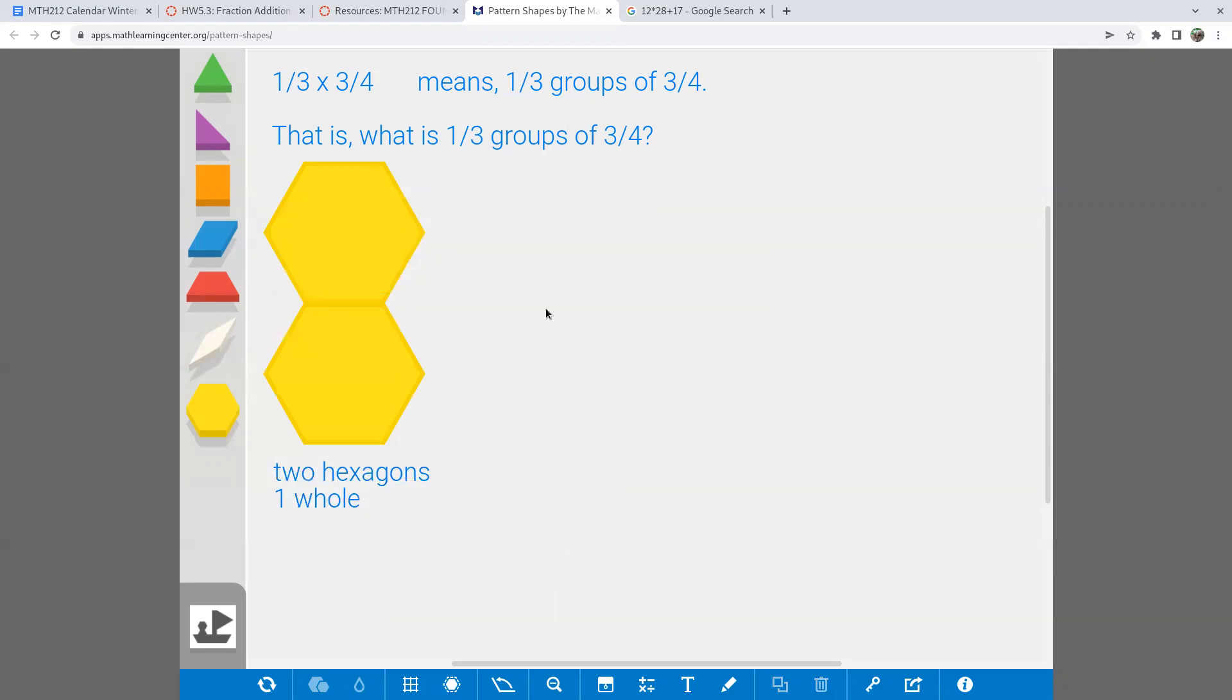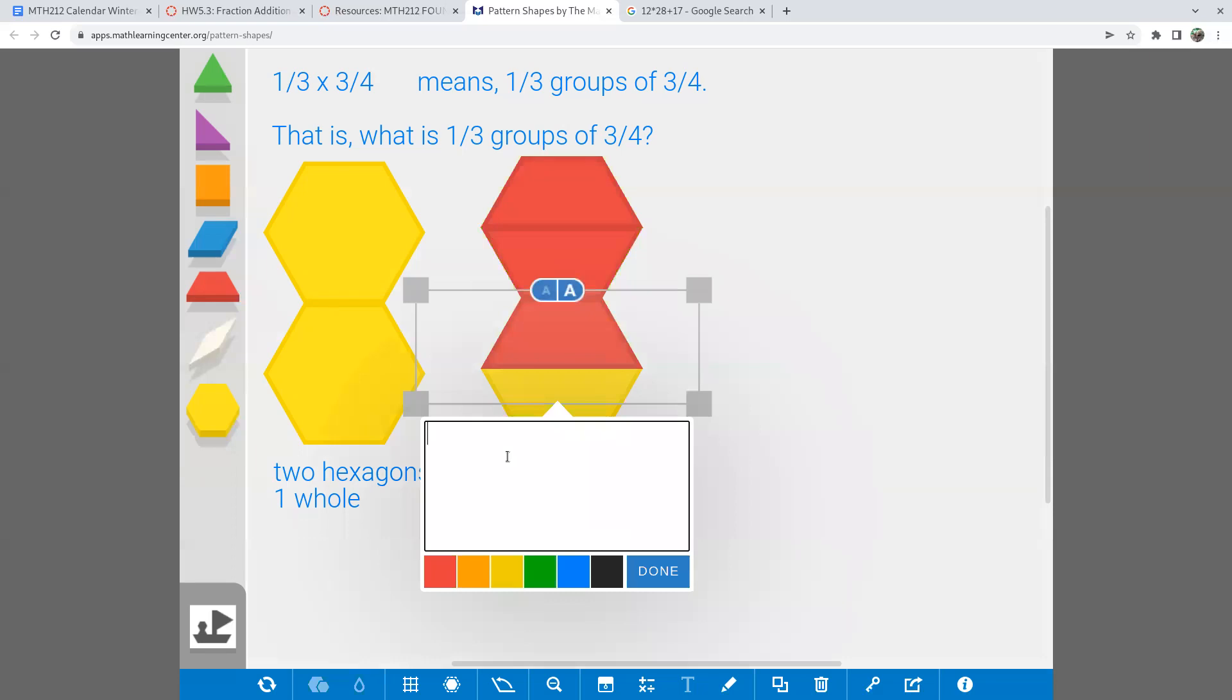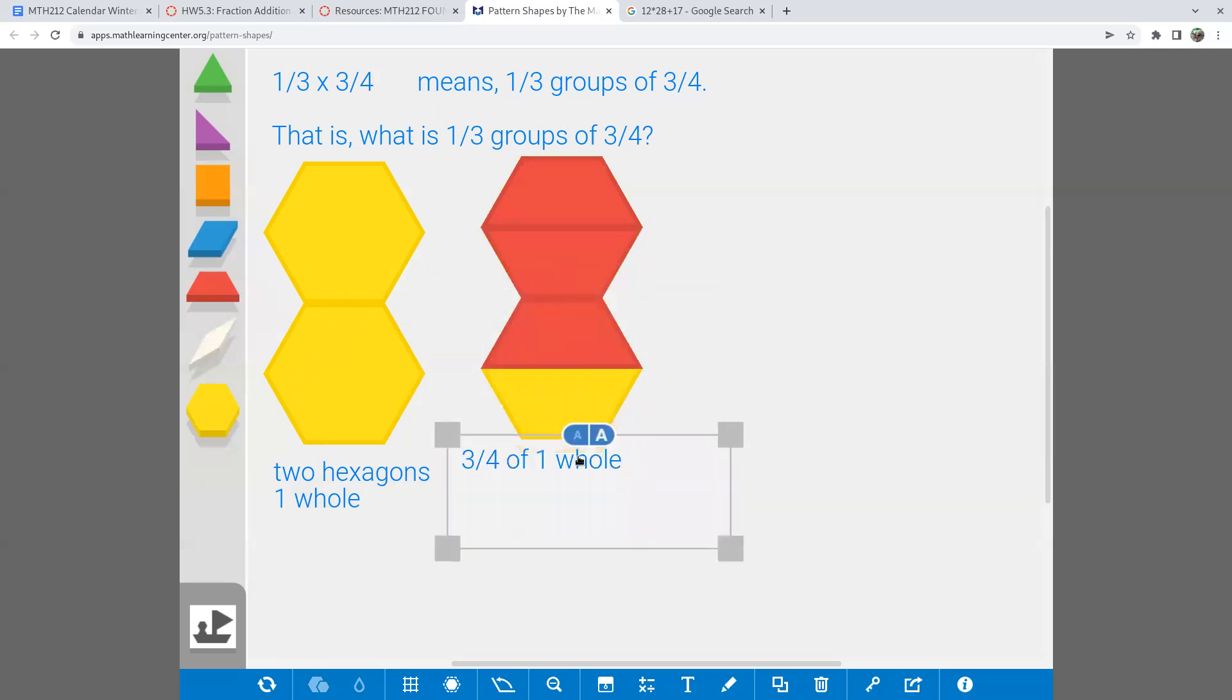Now I want to show what is three-fourths of that. So I'm going to bring up two hexagons again. And hopefully you remember seeing before that if two hexagons is a whole, then one trapezoid is a quarter of that. And I want three-quarters. Let's rotate this one. So there's my three-quarters right here. Let's make a little note underneath there. There's my three-quarters.